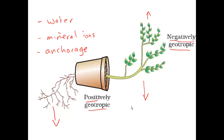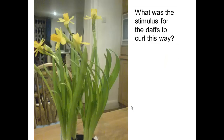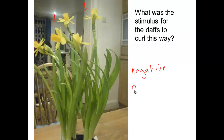The role of auxin in these geotropic responses is presently unclear, so just focus on making sure you understand the role of auxin in a positive phototropism. Back to the question: what was the stimulus for the daffs to curl this way? There are two possible options. One is light — there is down-lighting and light coming from above — but actually this room is fairly well lit with light coming from all sorts of directions, so it's unlikely to be a phototropism. Instead, I think this is a negative geotropism.